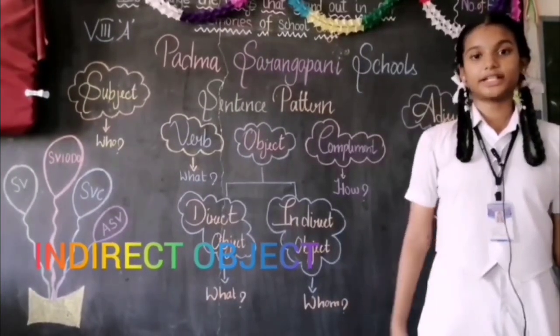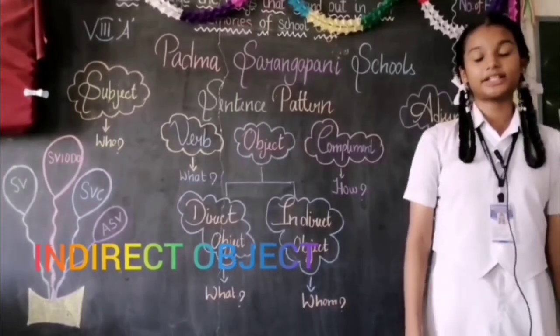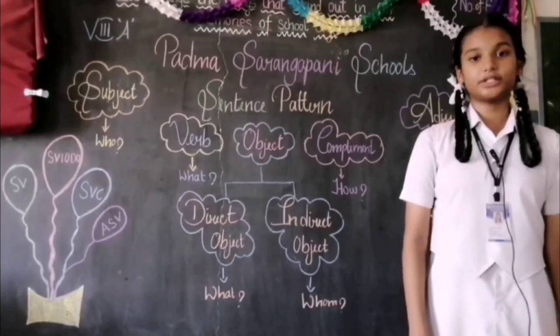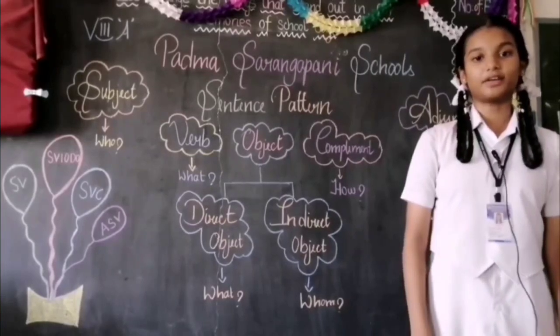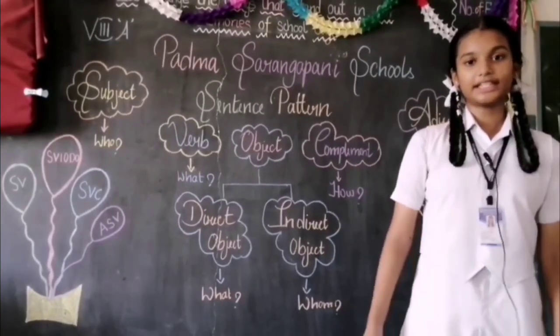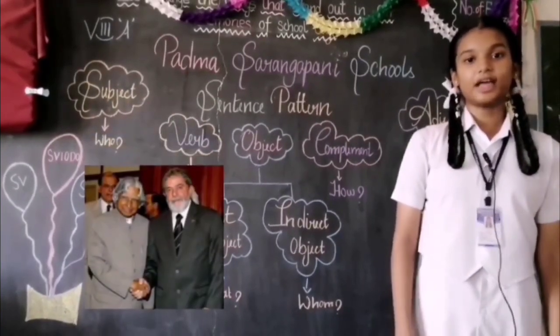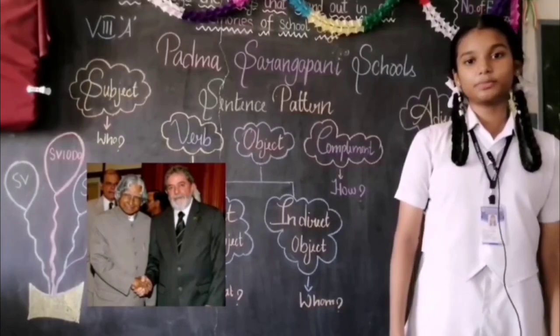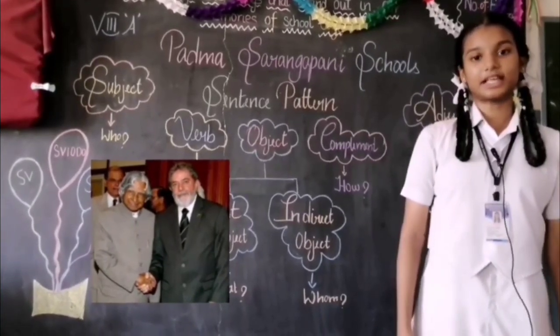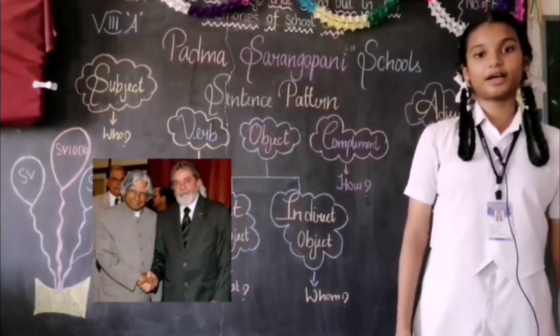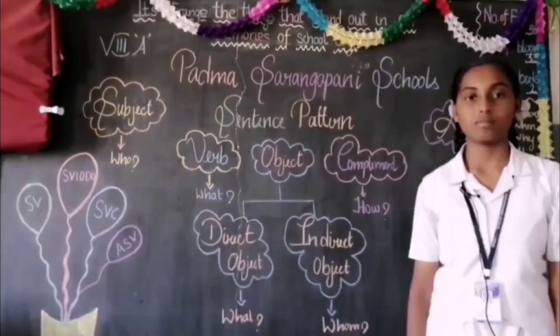Indirect object answers the question WHO after a verb. Example: I met the president. I met WHO? The president. The president is an indirect object.